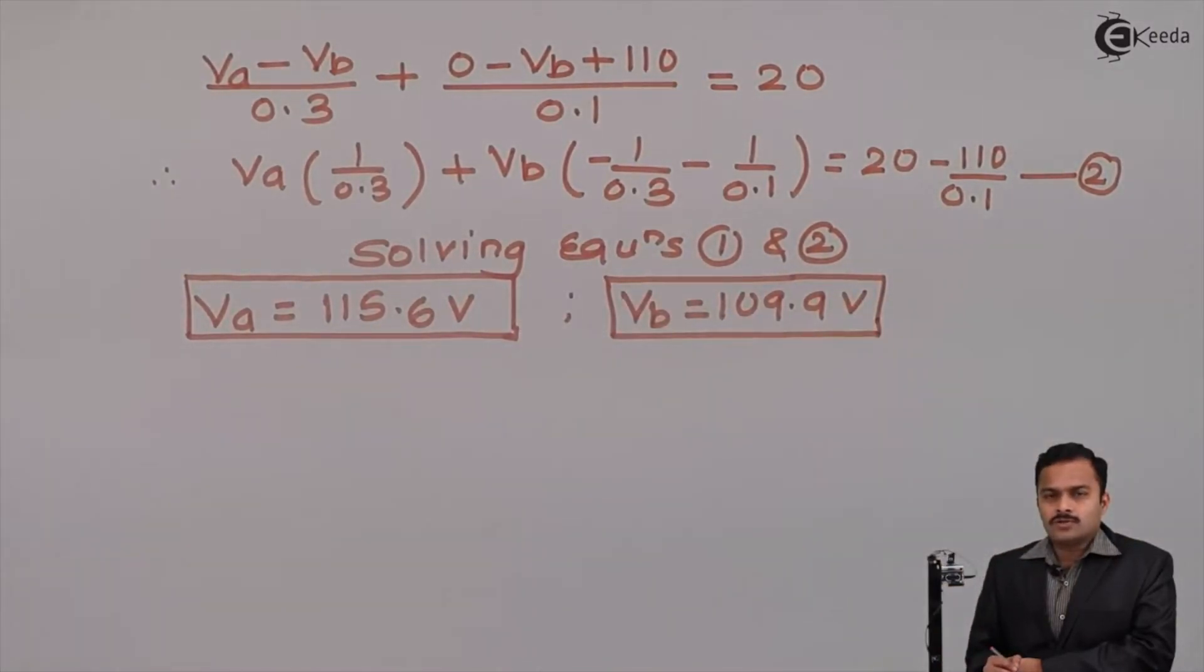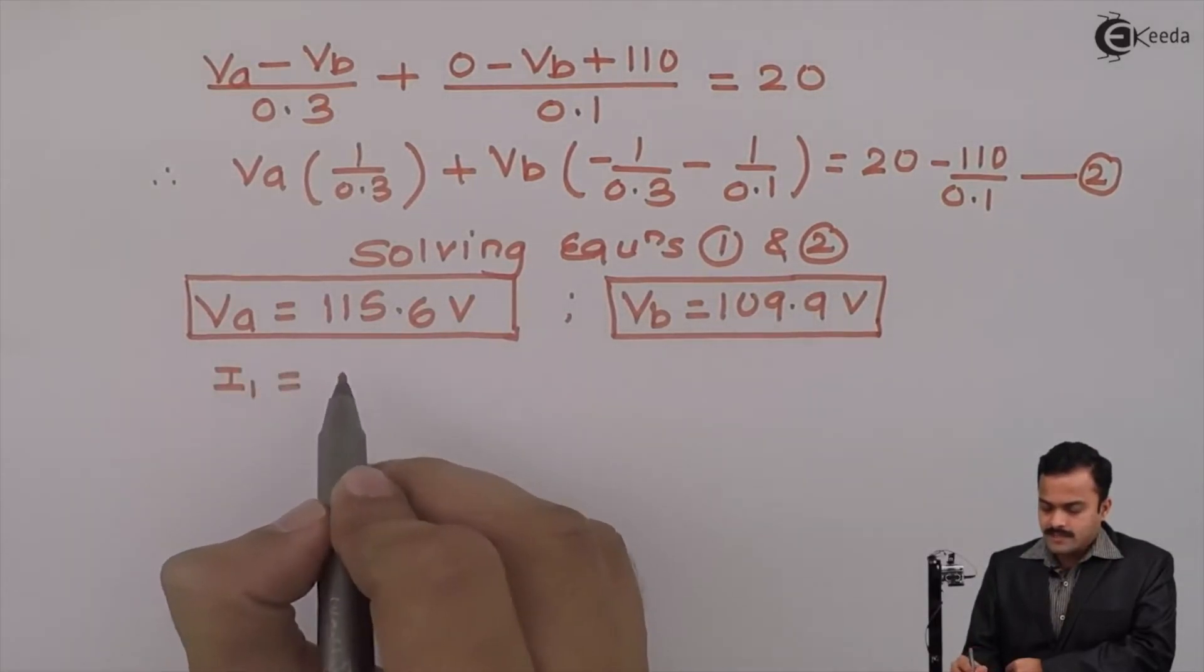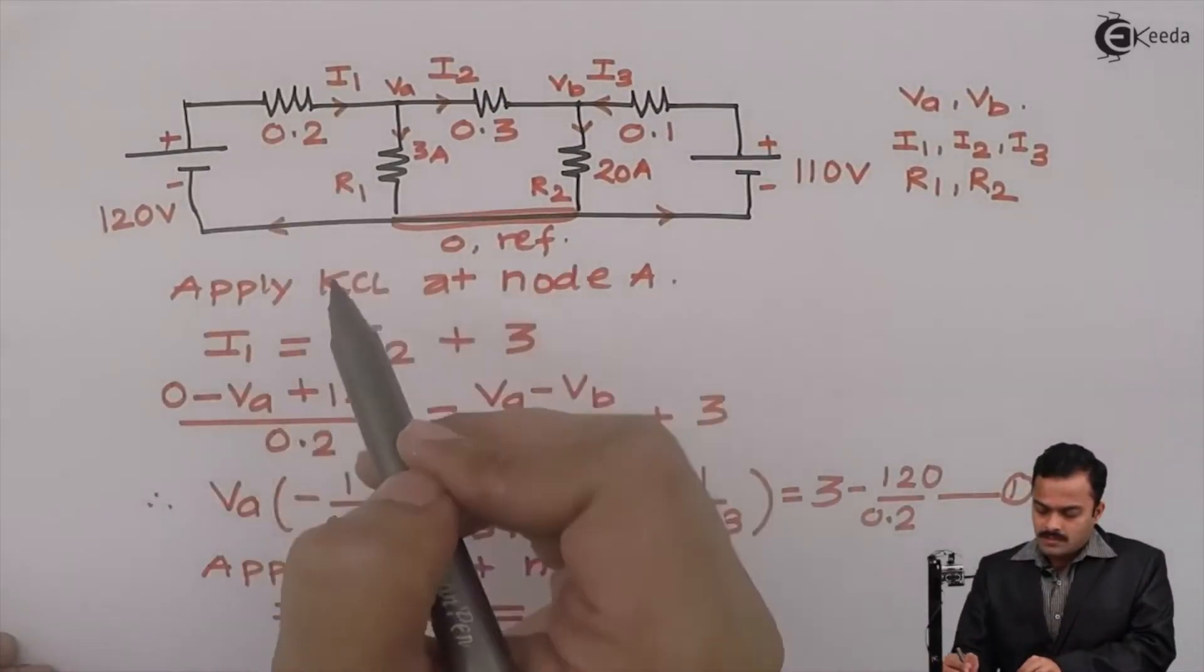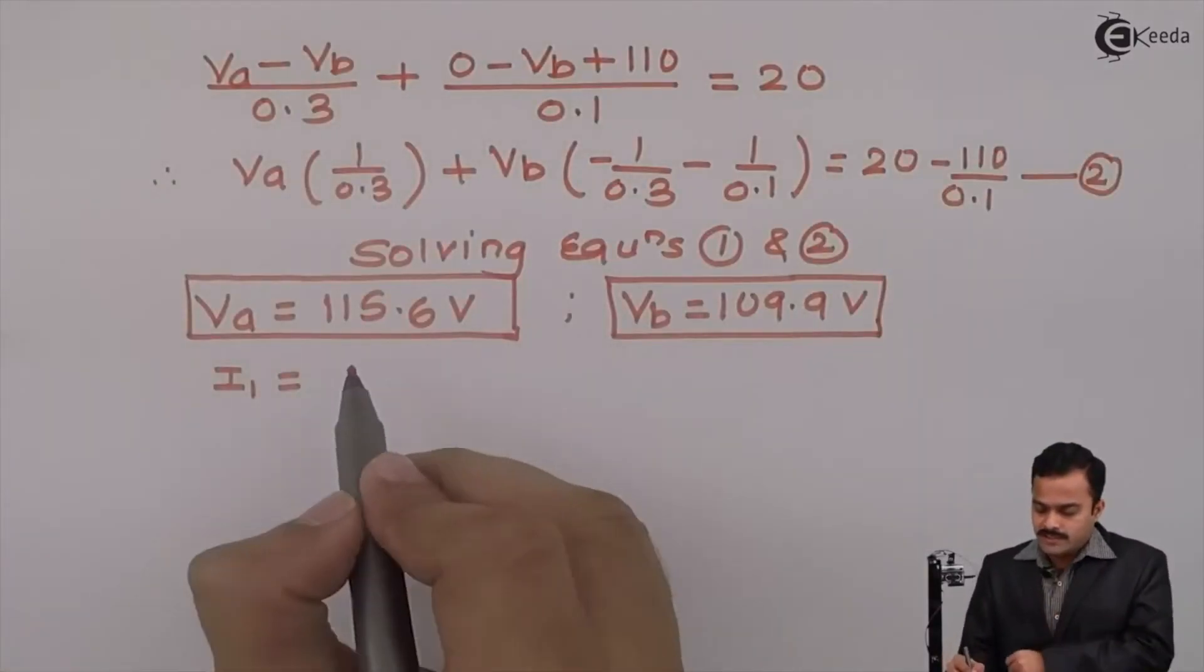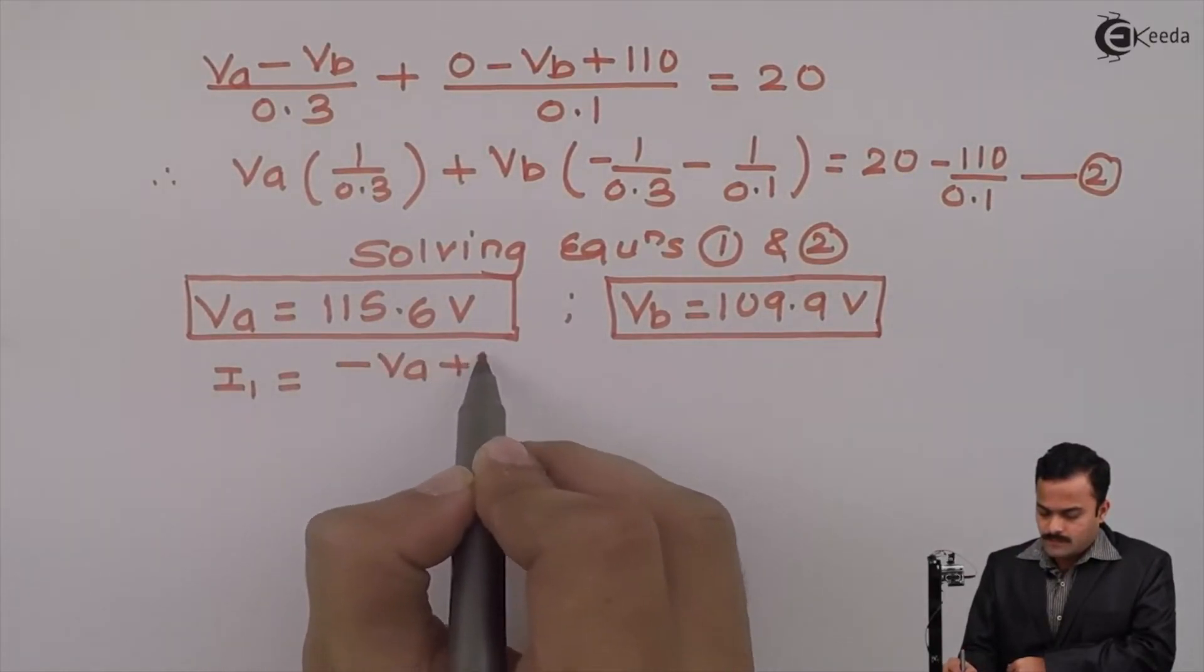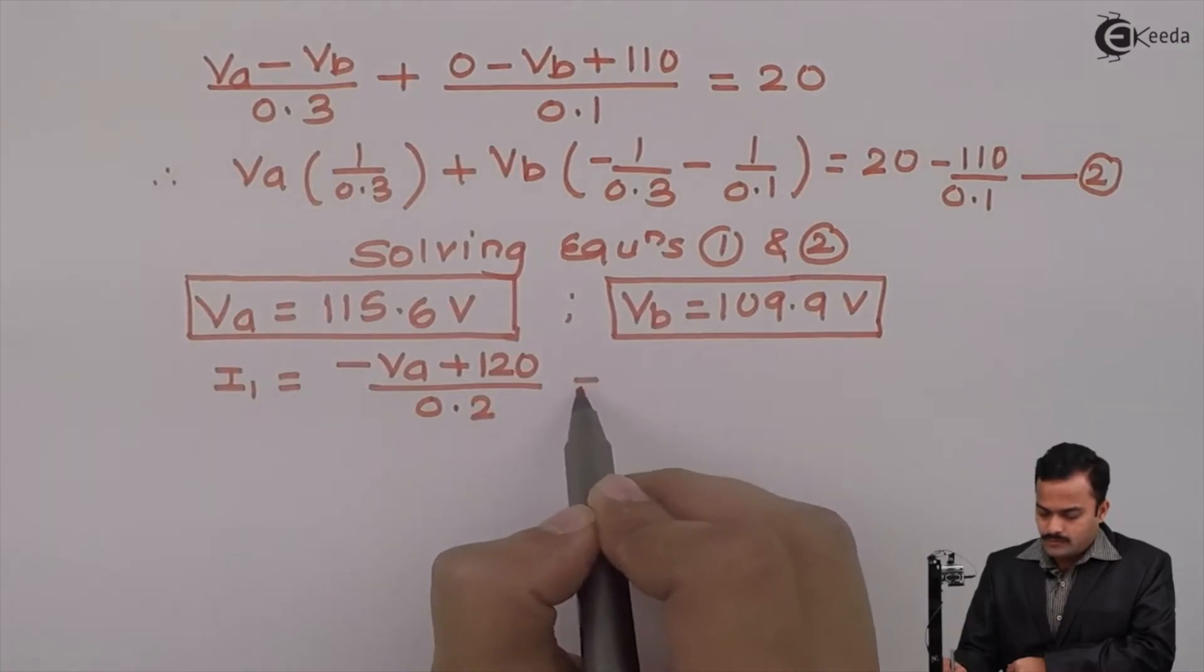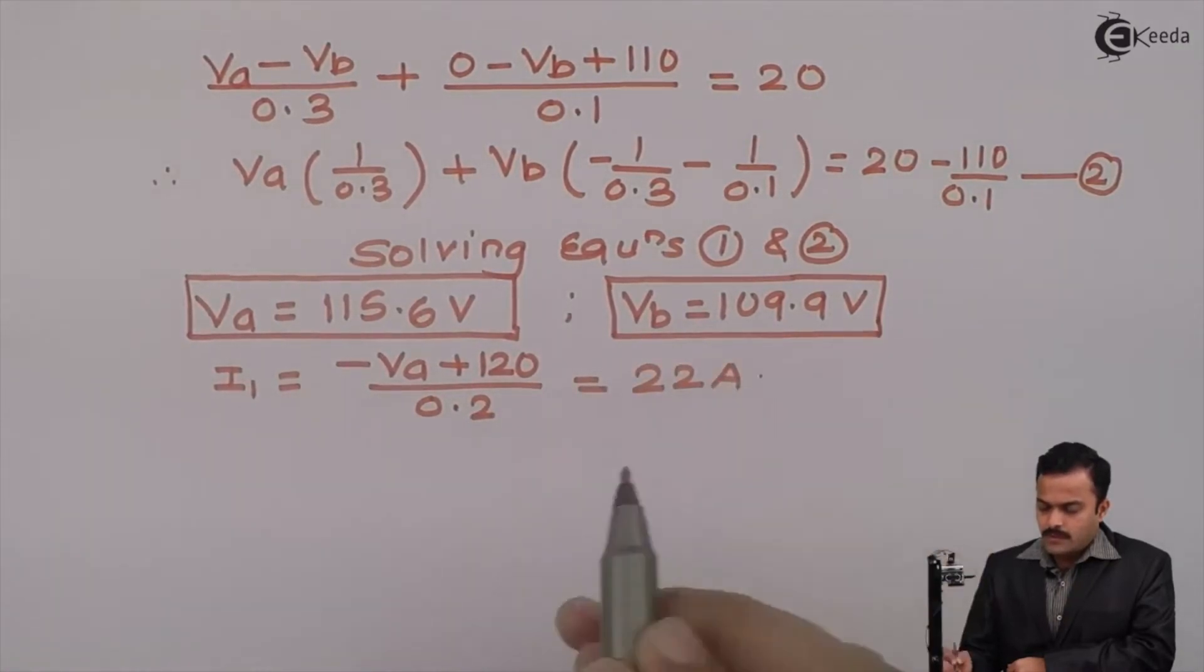By knowing the values of Va and Vb, I can get I1. Let's go back to the circuit to check. I1 equal to 0 minus Va plus 120 divided by 0.2. Actually it is minus Va plus 120 divided by 0.2. So, answer I will get is 22 Ampere.